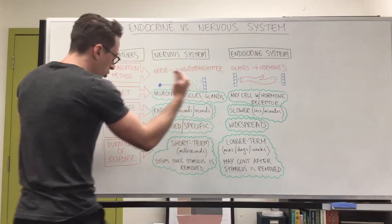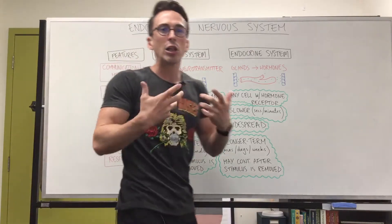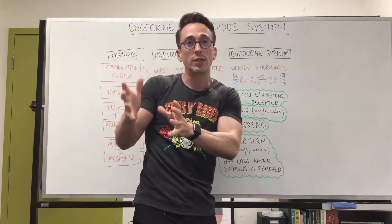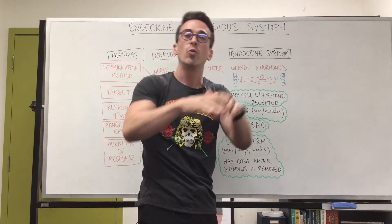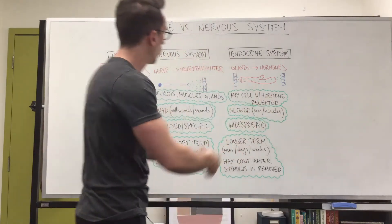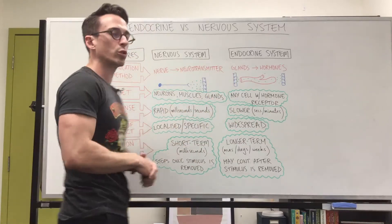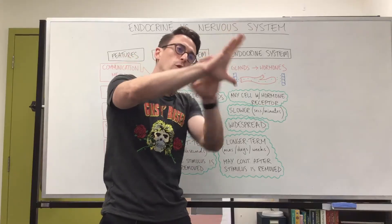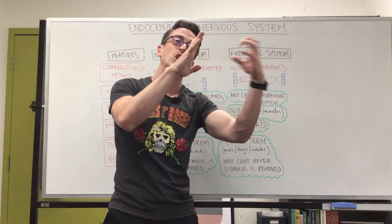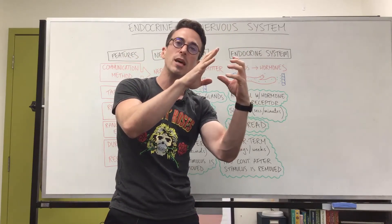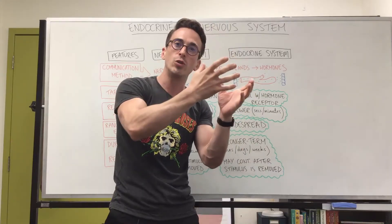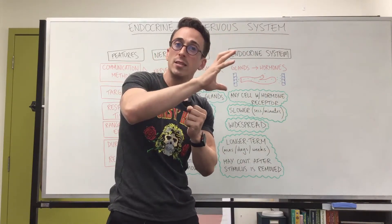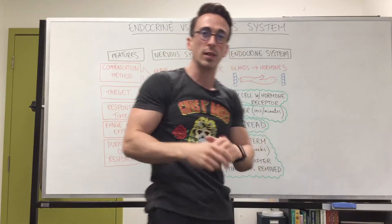When it comes to the duration of response — how long will the tissue respond to the stimulus — with the nervous system the neurotransmitter produces a very short-term response, in milliseconds. When the neuron releases its neurotransmitter in the synapse, there are enzymes that recycle and reuse those neurotransmitters, pulling them back into the neuron that just released them. That happens very, very quickly — milliseconds.